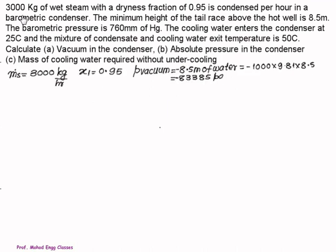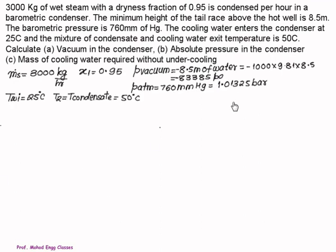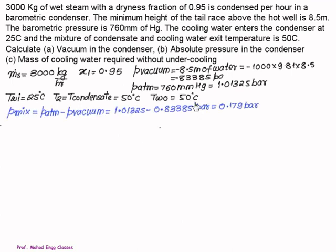We have mass of steam 3000 kg per hour. Inlet dryness fraction is 0.95. This 8.5 we treat as a vacuum of minus 8.5 meters of water. Any pressure can be converted using the formula rho*g*h. Rho of water is 1000, g is 9.81, and height is 8.5, which is approximately equal to minus 83,385 Pascal. Atmospheric pressure is 760 mmHg, which is approximately 1.01325 bar. Cooling water enters at 25 and temperature of condensate equals 50 degrees Celsius, as well as the temperature of water leaving the condenser is 50 degrees Celsius.